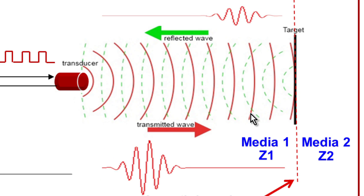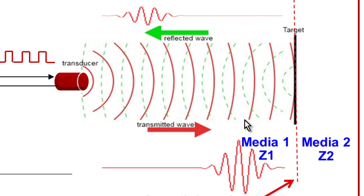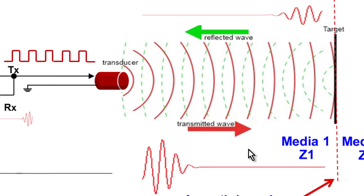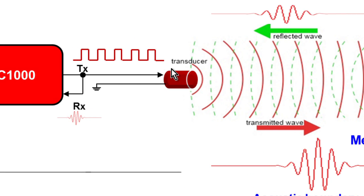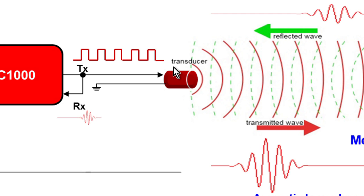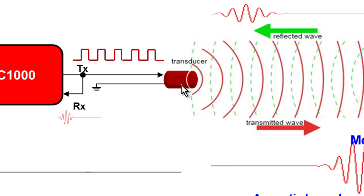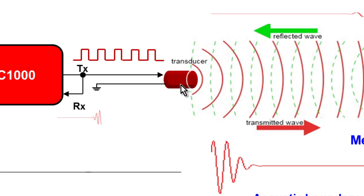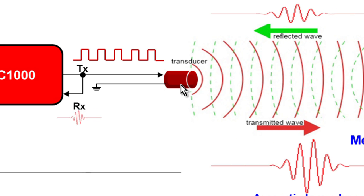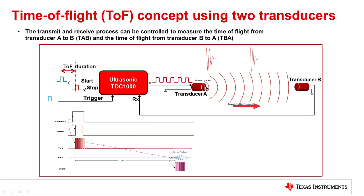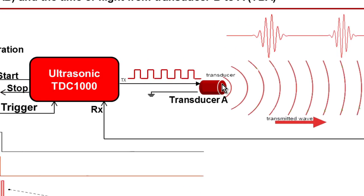Now, in this diagram, we're talking about a single transducer method. This is called pulse echo, where a single transducer is both the speaker and the microphone. The TDC1000 has the capability to use two transducers. There are some applications where you want to have one transducer as a transmitter and the other as a receiver, as is illustrated in this slide here.